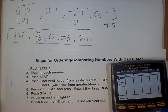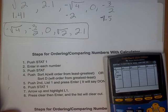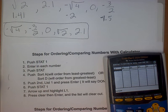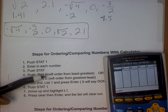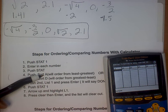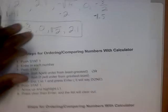To clear this for the next problem, arrow up to L1, press Clear, then Enter — the list is gone and you're ready for the next one. Very simple steps. Step four is one that a lot of people have trouble with, because you have to remember: Sort A orders from least to greatest, and Sort D orders from greatest to least.